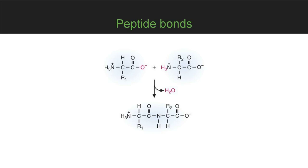Because amino acids contain two types of groups — negative charge and positive charge — they can interact to form peptide bonds. When a molecule of water is removed, two amino acids can be connected, building a sequence of amino acids to form a peptide or protein.